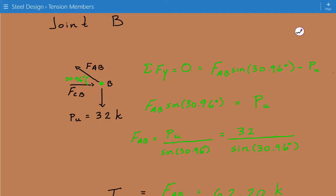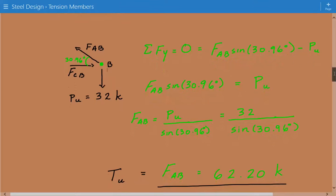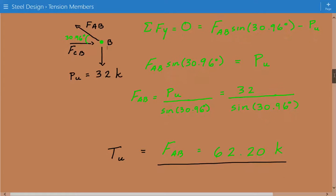we find that the force in AB, FAB times sine of 30.96 degrees minus P sub U, the factored live load. So we just rearrange this equation. And we find that the force in AB, the tensile load in AB is equal to the factored live load divided by sine of 30.96 degrees.